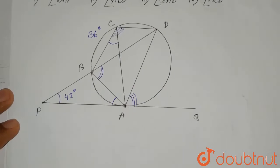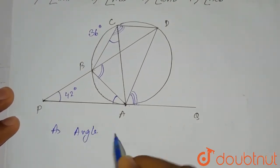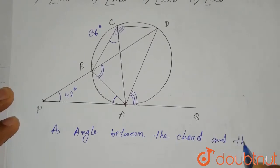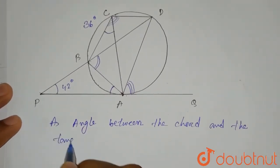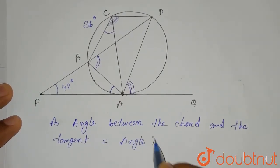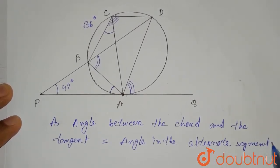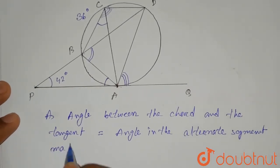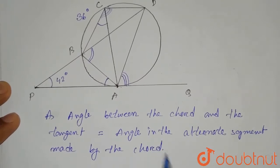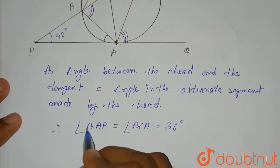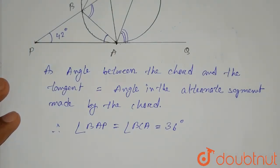So we can write: angle between the chord and the tangent equals angle in the alternate segment made by the chord. Therefore, angle BAP will be equal to angle BCA, which equals 36 degrees.